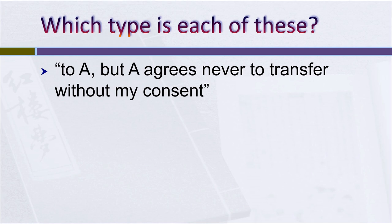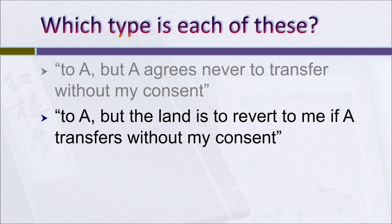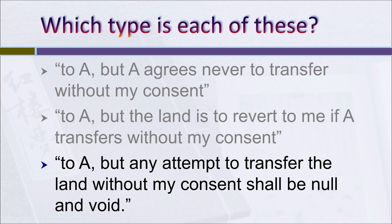Let's categorize some examples. First: the grantor conveys land to A, but 'A agrees never to transfer the land without my consent.' The key word 'agrees' equals promise or covenant — this is a promissory restraint. Second: 'the land is to revert to me if A transfers it without my consent' — a classic forfeiture restraint. Third: 'any attempt to transfer the land without my consent will be null and void' — a disabling restraint, where the transfer simply won't work.